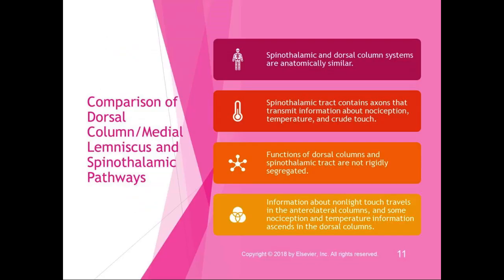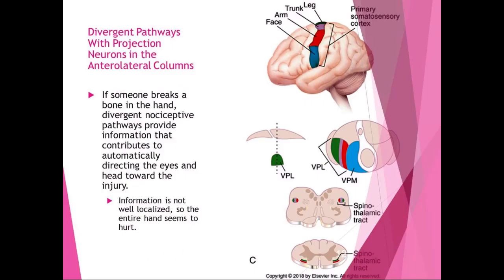The divergent pathways have projection neurons in the anterolateral columns as well — just like the spinothalamic tract. For example, if someone breaks a bone in the hand, divergent nociceptive pathways provide information that contributes to automatically directing the eyes and head toward the injury. The information is not well localized, so the entire hand seems to hurt — that throbbing, aching pain.